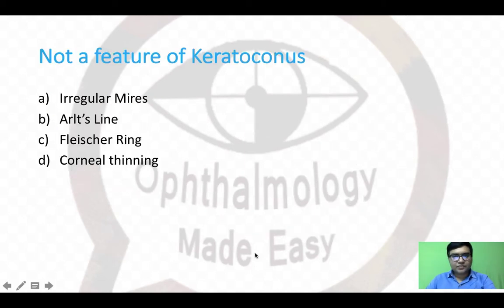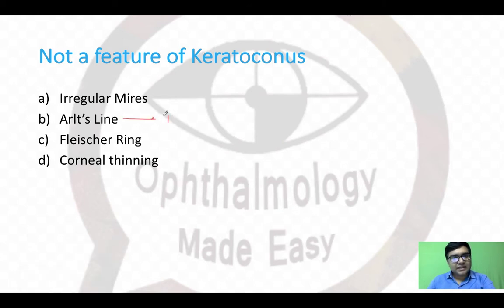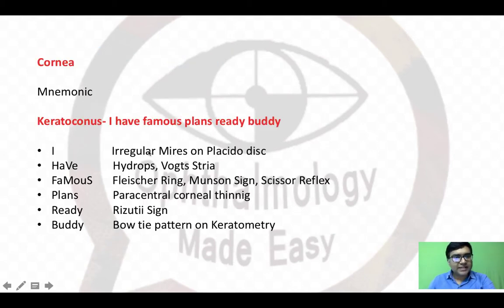The second question asks what is not a feature of keratoconus: irregular Placido disc, Arlt's line, Fleischer ring, or corneal thinning? Arlt's line is seen in trachoma and not in keratoconus. The mnemonic here is 'I have famous plans ready buddy.'